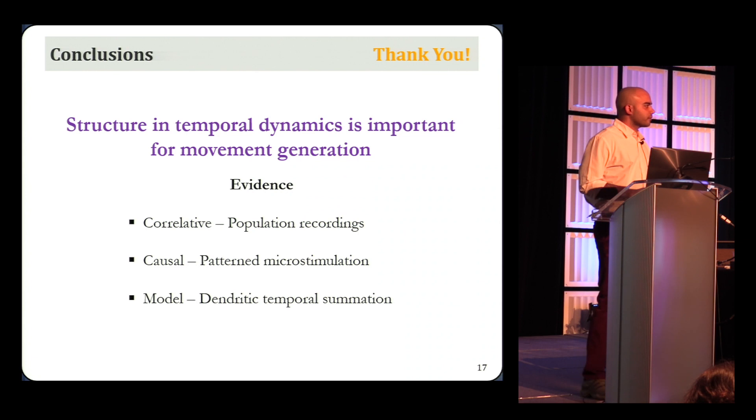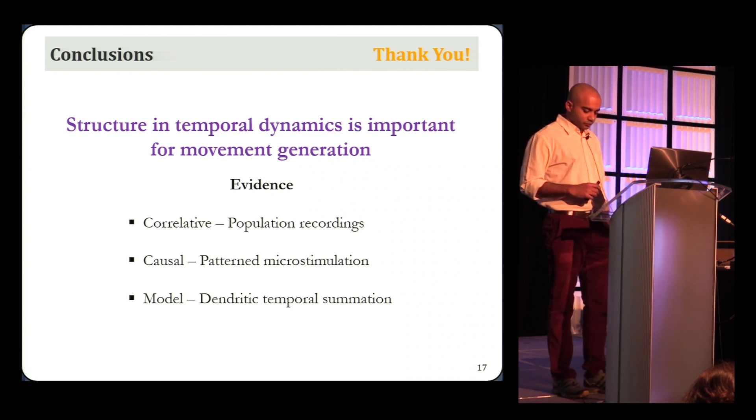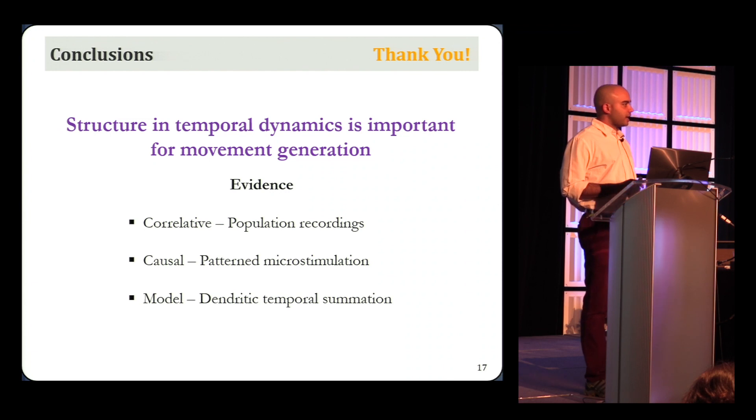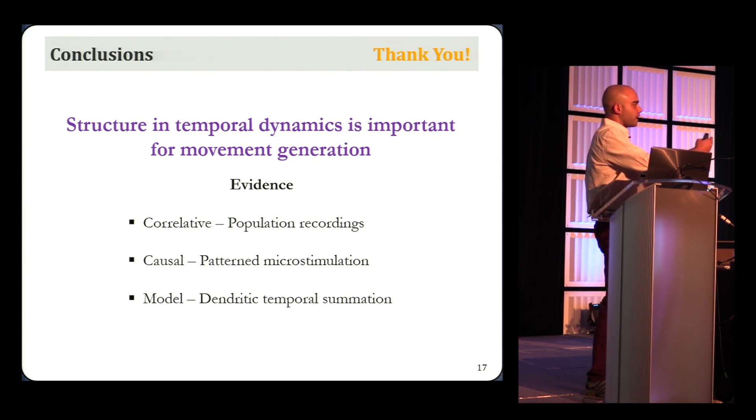That was a great talk. Have you compared your measure of temporal stability to any measures of correlated variability, like Fano factor or something? Right. So we have. And it turns out that the Fano factor in this case for the superior colliculus during the visual response increases. But the key difference between the temporal stability and Fano factor is that Fano factor is necessarily computed across trials. So you could have a case where the neurons are temporally stable across time within a trial, but they could be completely uncorrelated across trials. So you could have those two measures are dissociable. Thanks.